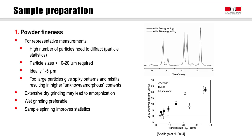However, one should be careful in grinding because extensive dry grinding may lead to amorphization of sensitive soft phases. Therefore, for any phases that cannot be affected, wet grinding is preferable. This can be done on any kind of clinker, alites, limestone and hydrous phases, for instance by using grinding media like isopropanol, acetone or ethanol.